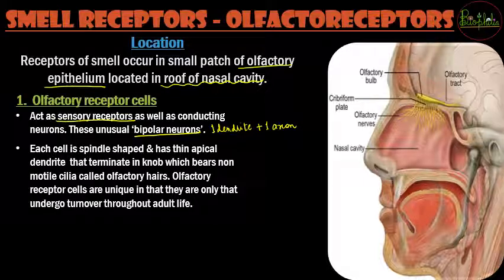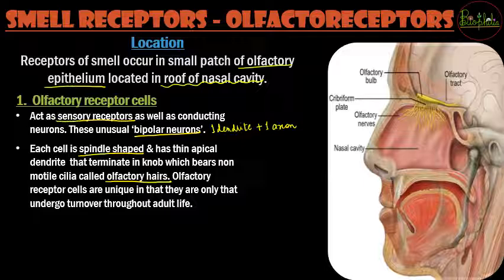Recall that unipolar neurons only had axons, whereas dendrites were absent in those. The olfactory receptor cells are bipolar neurons. Each cell is spindle-shaped with thin apical dendrites, and these terminate at a knob which bears non-motile cilia — these cilia are called olfactory hairs. These olfactory hairs move with changes in the environment, generating an action potential that stimulates the dendrites and is transmitted from neuron to neuron.